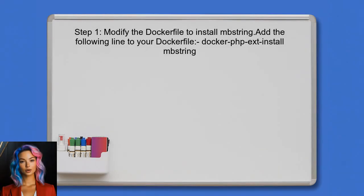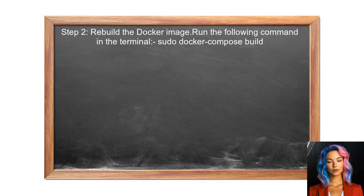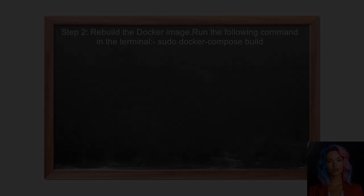To begin resolving the issue, ensure that the mbstring extension is correctly installed in the Docker image. This can be done by modifying the Dockerfile to include the installation command for mbstring. Next, rebuild the Docker image to apply those changes by running a specific command in the terminal.